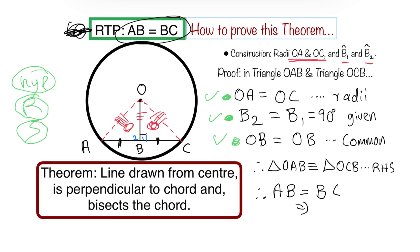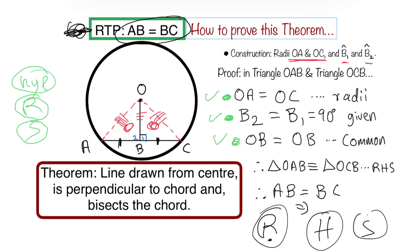In summary, here's the thinking: after constructing, aim for R — the right angle, which is angles B1 and B2; aim for H — the hypotenuse, which are the radii you constructed; and aim for S — the common side OB. Once you have those three, you conclude congruence and then write the RTP. Every time you see this proof, just say: I'm looking for my R, my H, and my S. Then conclude the triangles are congruent and state what is required to be proven. Easy!